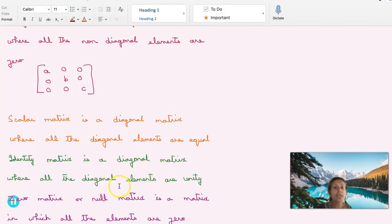Identity matrix is a diagonal matrix where all the diagonal elements are unity. So identity matrix is a diagonal matrix, but all the diagonal elements are one. It's also a scalar matrix, identity matrix.